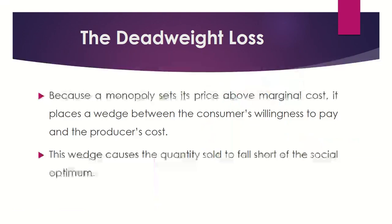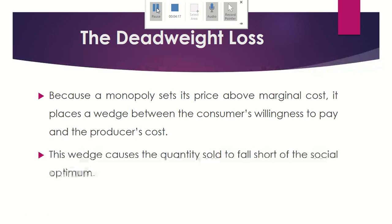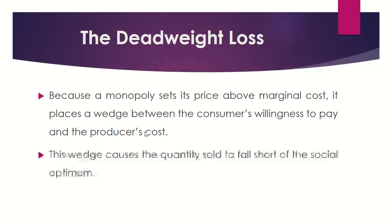When we talk about the welfare cost of monopoly, there comes the concept of deadweight loss to society. Because a monopoly sets its price above marginal cost, it places a wedge between the consumer's willingness to pay and the producer's cost. This wedge causes the quantity sold to fall short of the social optimum, which we will discuss with the help of a diagram.